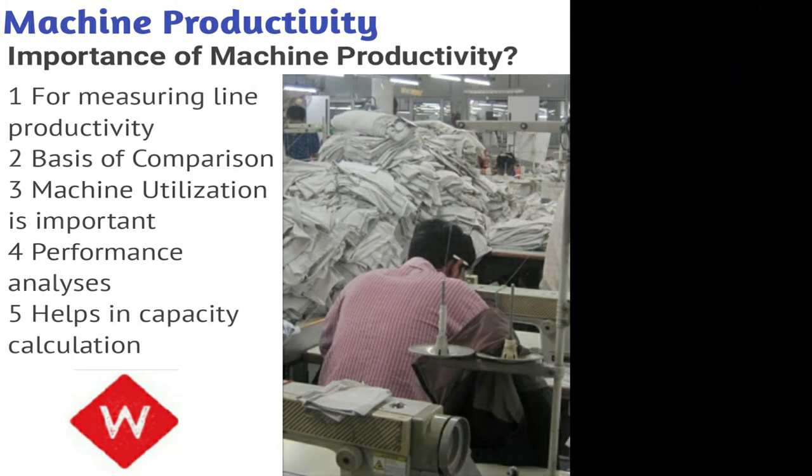Machine productivity is used to measure the performance of a production line. You can use it to compare line performance and see how productive each machine is.